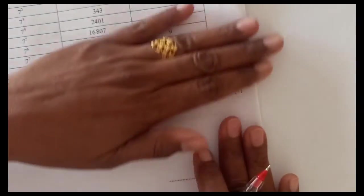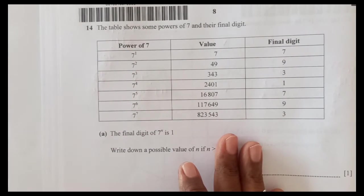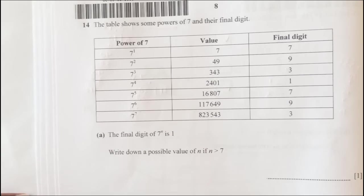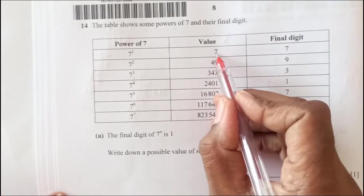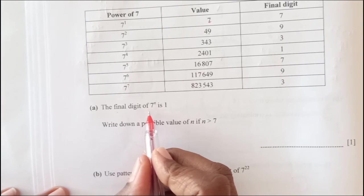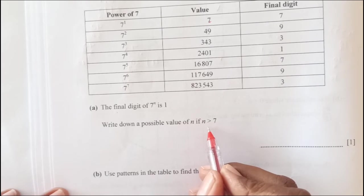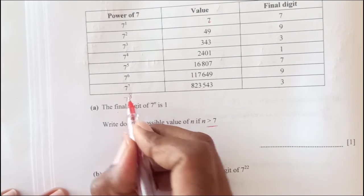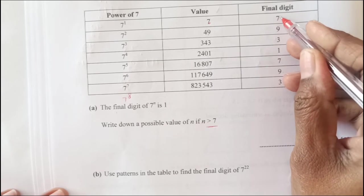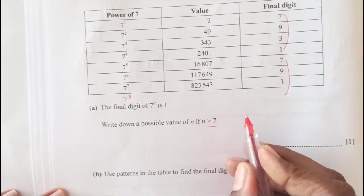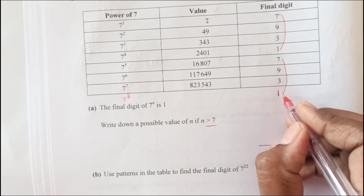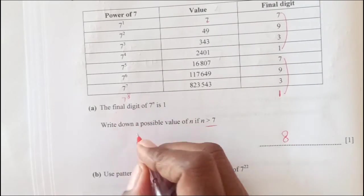The next one, the table shows some powers of 7 and their final digit. Power of 7, value, final digit. Final digit means digit at ones place: 7, 9, 3, 1 here we have written. Part a, the final digit of 7 power n is 1, write down the possible value of n greater than 7. You see the pattern here is following 7, 9, 3, 1, 7, 9, 3, 1. Next one is going to be, he said the answer is 1, so here the next digit is going to be 1 the last digit. So n can be 8 greater than 7.